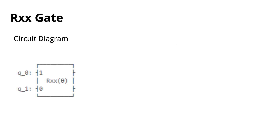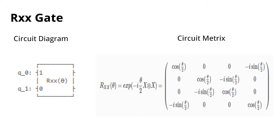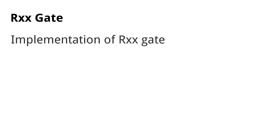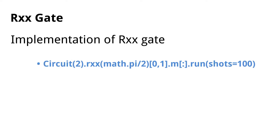The circuit diagram for the RXX gate is shown below. For the given RXX gate, the matrix looks like the following. Here I will show you how to implement the RXX gate in code. By the following code we could implement the RXX gate, and after running this code we will get this as an answer.